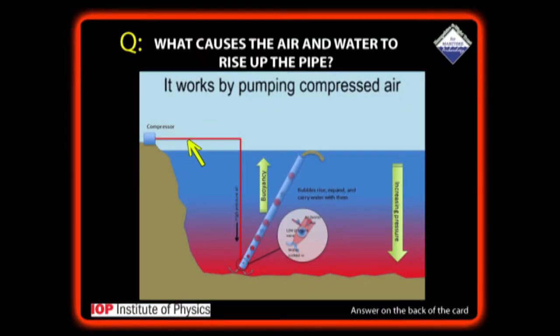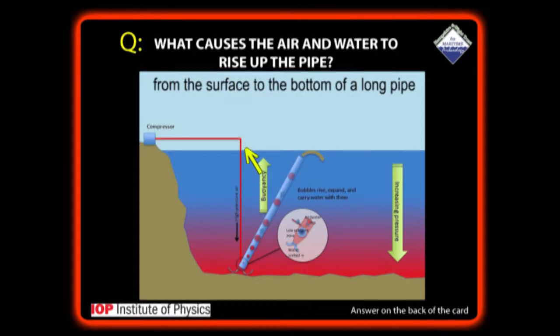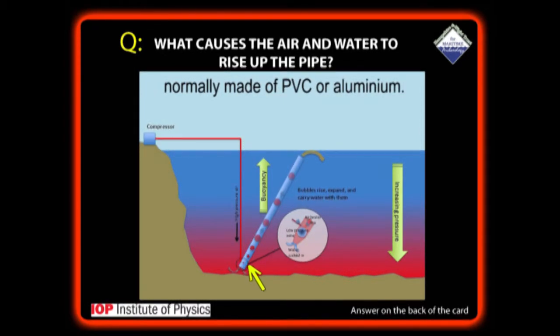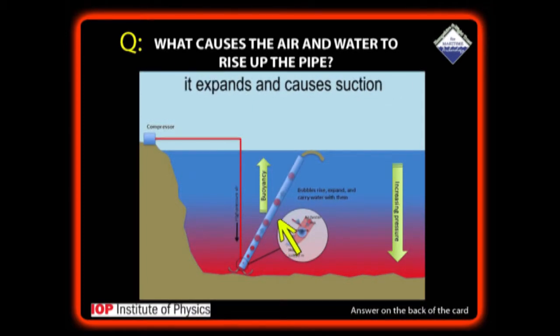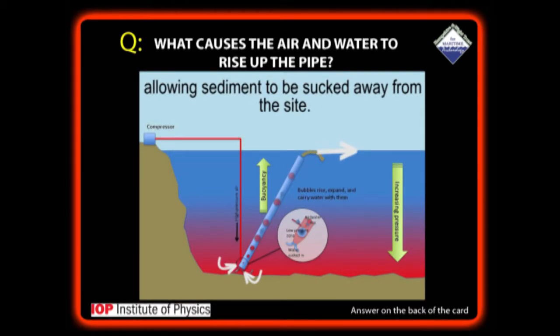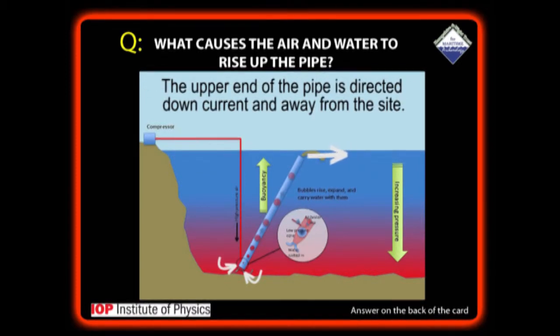It works by pumping compressed air from the surface into the bottom of a long pipe, normally made of PVC or aluminum. As the air rises up the pipe, it expands and causes suction, allowing sediment to be sucked away from the site. The upper end of the pipe is directed down current and away from the site.